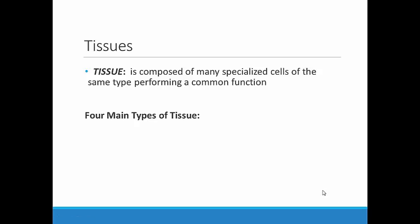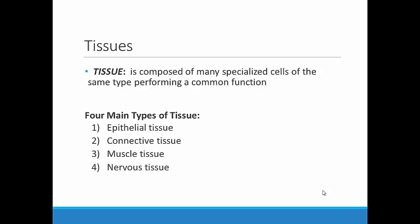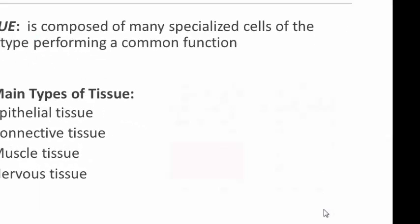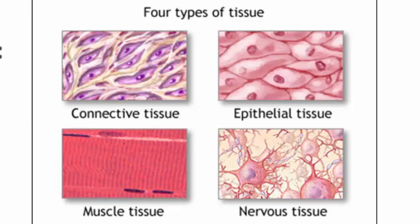Now let's move on to talking a little more about tissues found in the human body. Remember that tissue just means that we have a number of specialized cells that have come together to perform some sort of work. There are four types of tissues found in organisms: epithelial tissue, connective tissue, muscle tissue, and nervous tissue. There are different subsets of tissues found in each category, but generally the tissues within each category will be performing similar types of tasks. As you can see from this diagram, the different types of tissue look very different from one another. This makes sense because each tissue performs a different job in the body and, as we already know, form fits function.